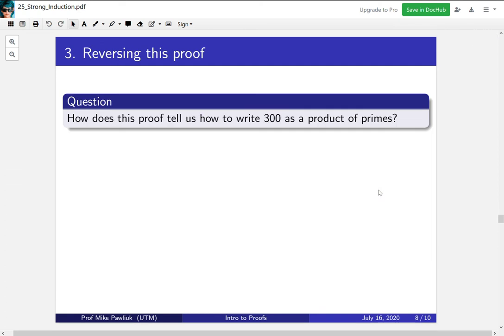So this is the idea of reversing a proof to give us a construction. How does this proof tell us how to write 300 as a product of primes? Well, the first question is, is 300 prime? So that was the induction step. It was broken up into, is your number prime or not? Well, the answer is no. 300 is 3 times 100.